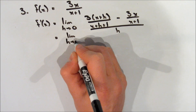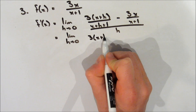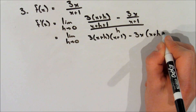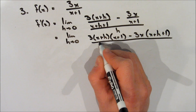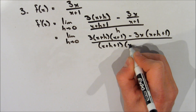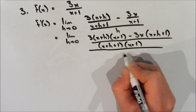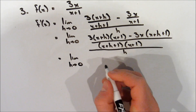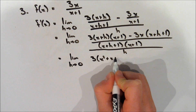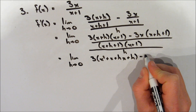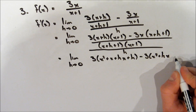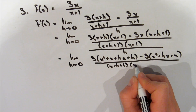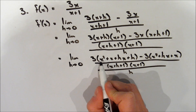On the next line we write the limit as h approaches 0 and find a common denominator for the two fractions. We multiply the numerator of the first term by the denominator of the second, and vice versa, then multiply both denominators together. This gives one big fraction all over h. Expanding the terms in the numerator, we see a pattern between the positive and negative terms. The denominator is x plus h plus 1 multiplied by x plus 1, all over h.